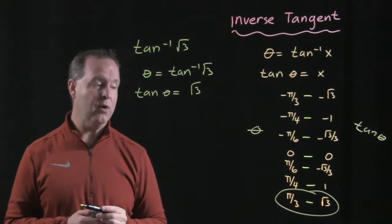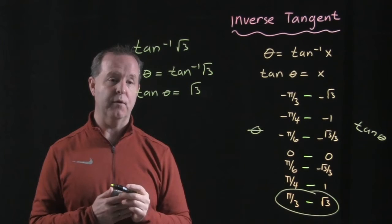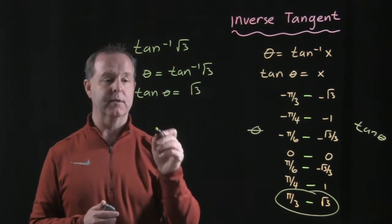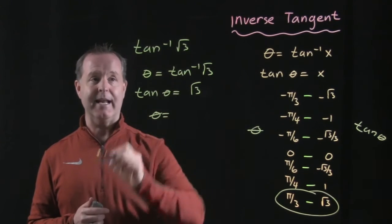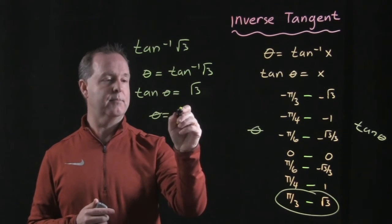So what's the angle that produces a value of √3? It's π/3. So my θ, my angle, that makes an inverse tangent √3 is π/3.